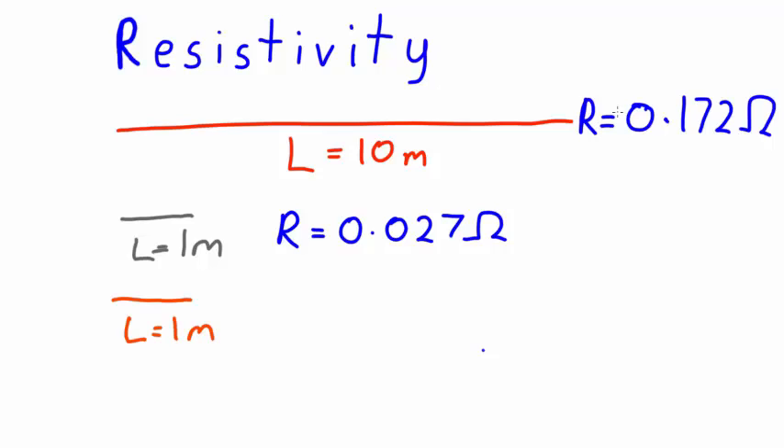In order for it to be a valid experiment I need to try and keep all the other variables the same. So I can measure the third wire which is made of copper and is one metre long. Its resistance is 0.017 ohms.